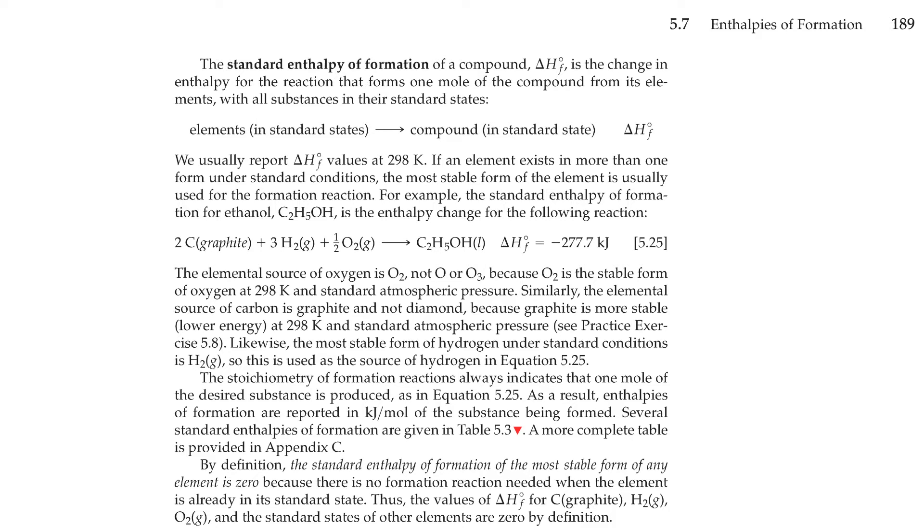Similarly, the elemental source of carbon is graphite and not diamond, because graphite is more stable and has a lower energy at 298 K and standard atmospheric pressure. Likewise, the most stable form of hydrogen under standard conditions is H2, as a gas, so it is used as the source of hydrogen in equation 525.